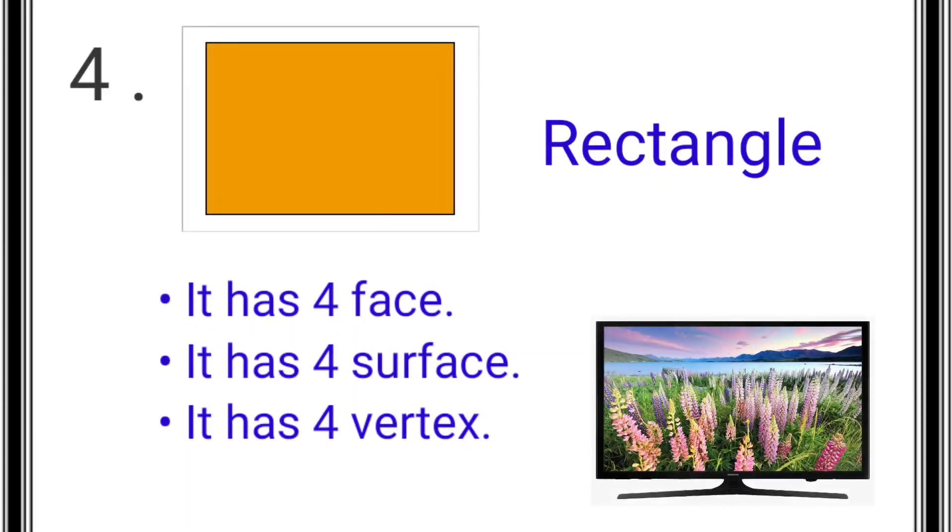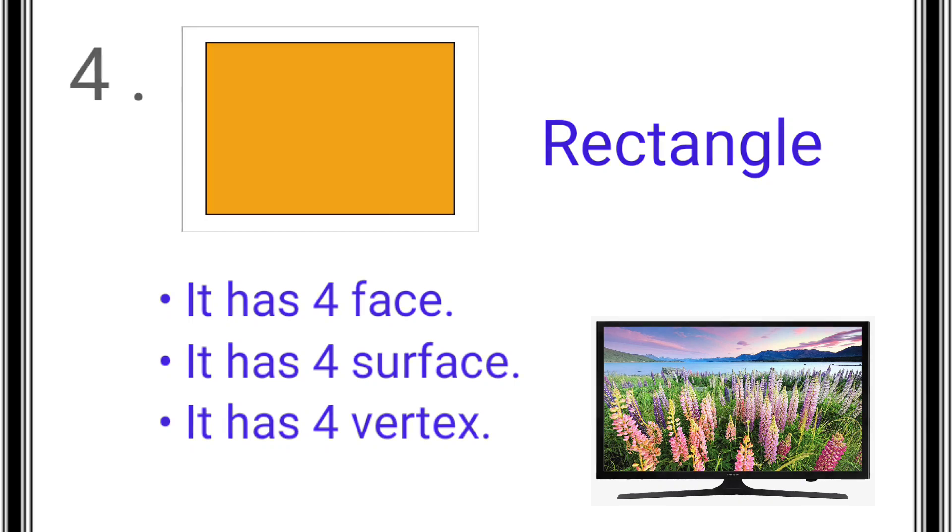The fourth shape is rectangle. A rectangle has four faces, four surfaces, and four vertices. Example: TV.